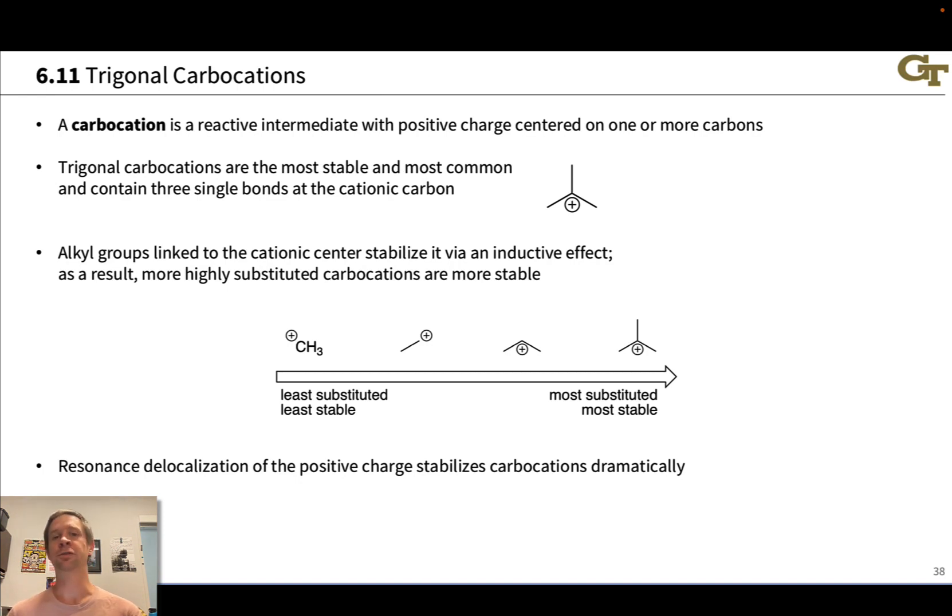In thinking mechanistically, it's quite frequently important to think about the structures and stabilities of reactive intermediates. We'll be looking at relatively unstable, typically ionic intermediates, and thinking about their stability, their relative stability. For example, if we're comparing related reactions and thinking about relative rates or relative outcomes.